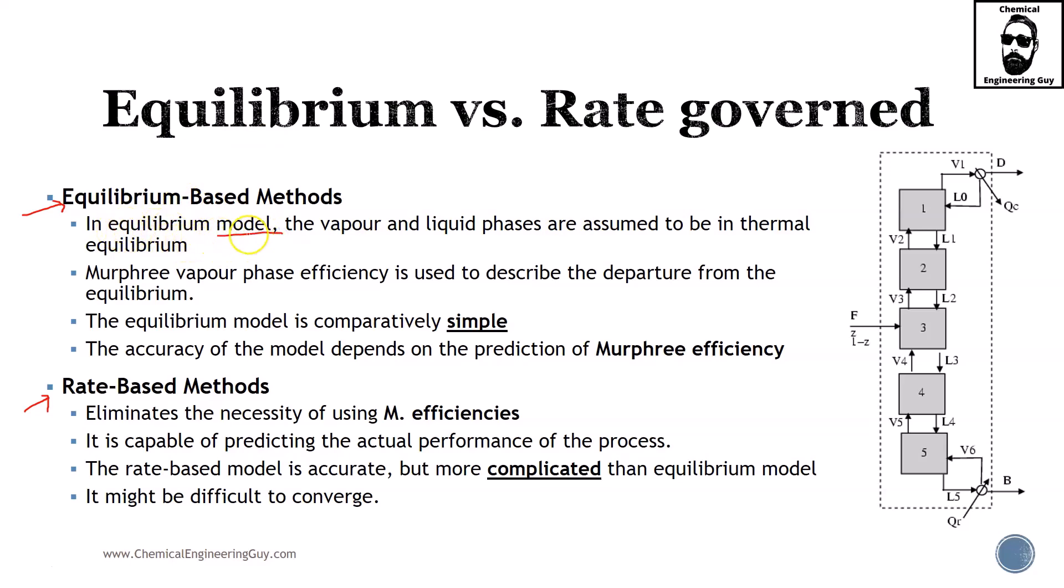In the so-called equilibrium model, the vapor and liquid phases are assumed to be in thermal equilibrium. What do I mean with a stage? I don't always assume this is a tray. It can be a section of a packing or a section on the column, but for simplicity, let this be a tray. This is the second tray, and what we are assuming here is that the vapor going out and the liquid going out, that's why we use two and two, these two are in thermal equilibrium and in chemical equilibrium.